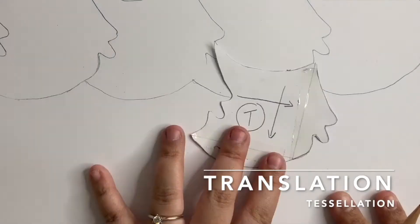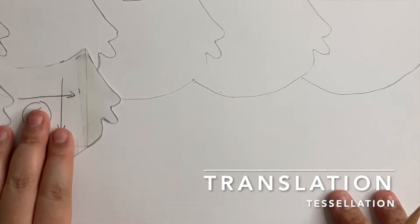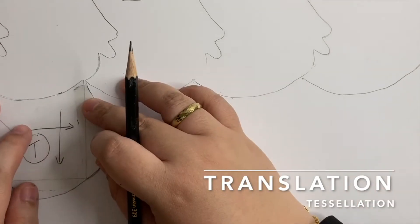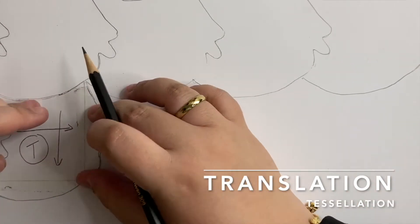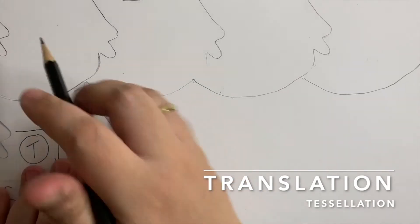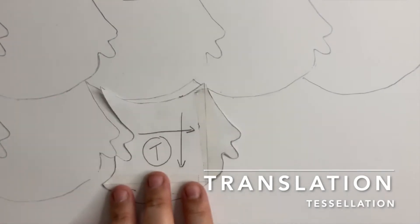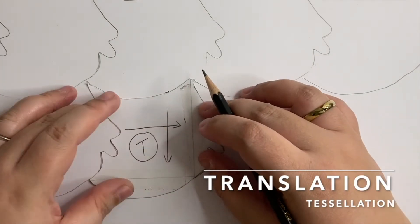Next, we are going to complete the next row. From the first traced shape, you just slide down your template, fit and trace. Repeat these steps until your whole paper is covered and there are no gaps and spaces.